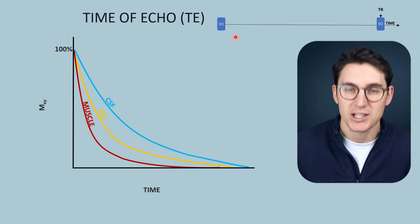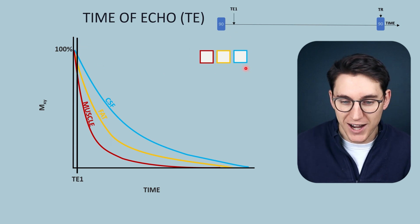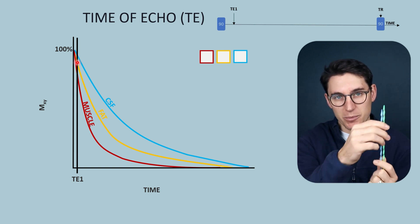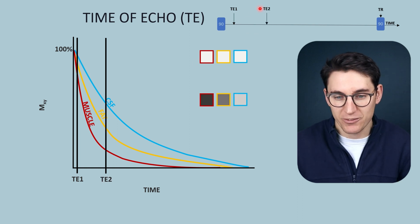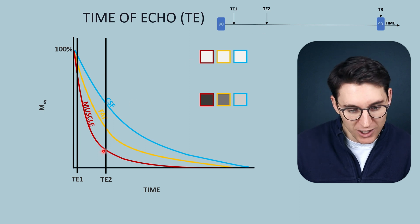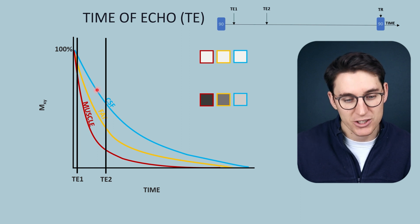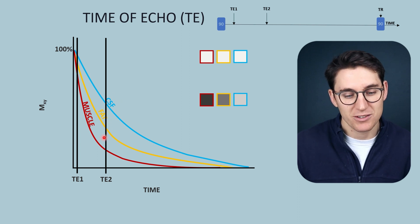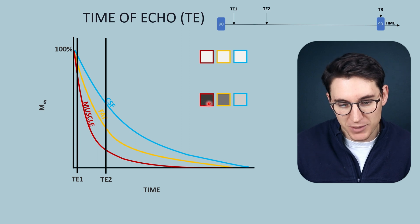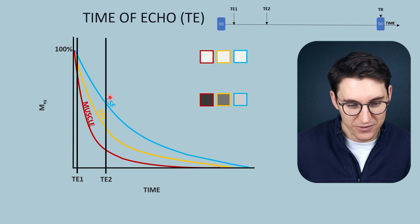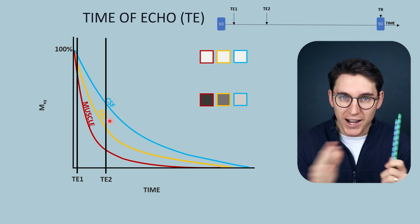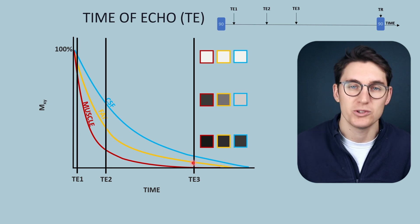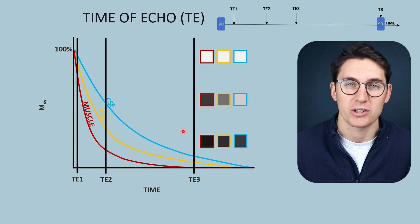If we select a short time of echo, we get high signal but very little contrast, because all transverse magnetization vectors have yet to exhibit T2 relaxation. If we wait slightly longer with a longer TE, we highlight the differences in transverse relaxation — T2 relaxation happens much slower in CSF than in fat or muscle. By increasing the TE we highlight T2 differences. However, if we wait an even longer TE, we lose both contrast and signal, which is useless.